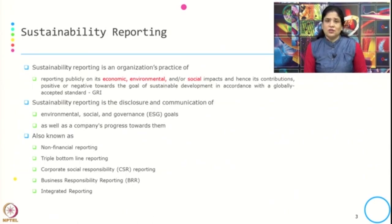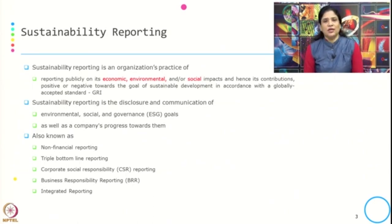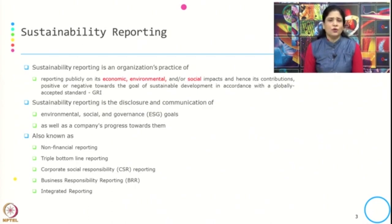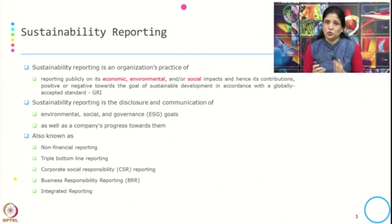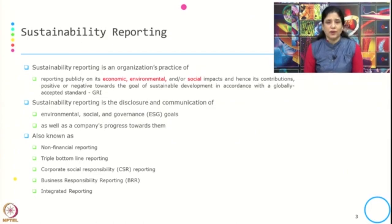A typical question is how a sustainability report differs from annual reports. An annual report is a financial report that also considers health, environment, safety and social responsibility. But a sustainability report is a standalone report that follows an accepted standard specifying what should be part of the sustainability disclosure, and accordingly the sustainability report is prepared.